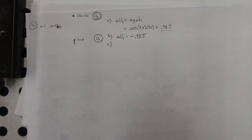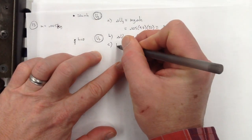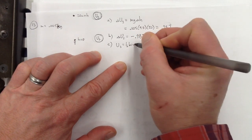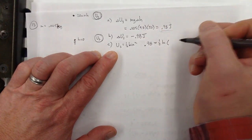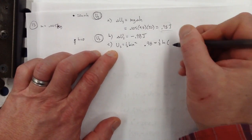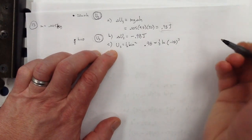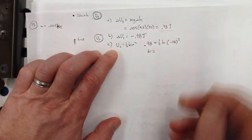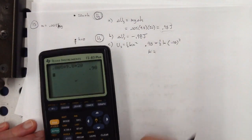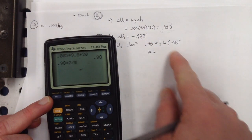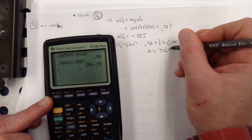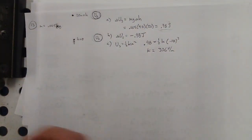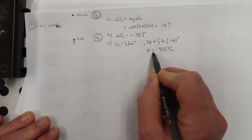For part C — what's the spring constant? When the spring was storing all the energy it had 0.98 joules: one-half k times x squared, where x equals 8 centimeters compressed. That's the only unknown. So k equals 0.98 times 2, divided by 0.08 squared — that's about 306 newtons per meter, which rounds to 300 with two significant figures.